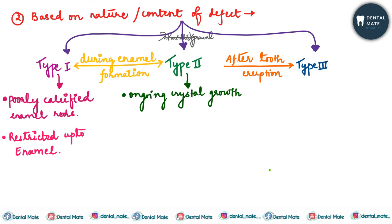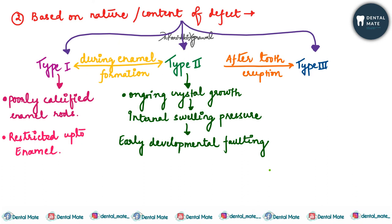Type 1 consists of poorly calcified enamel rods. During the process of mineralization, crack-like defects are formed if that particular area of the enamel rod is hypocalcified or uncalcified. These are restricted to the enamel. For Type 2, because of ongoing crystal growth, there occurs an internal swelling or pressure in the tooth, which causes early developmental faulting, and crack-like defects are formed.